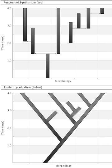Mayr later complimented Eldredge and Gould's paper, stating that evolutionary stasis had been unexpected by most evolutionary biologists, and that punctuated equilibrium had a major impact on paleontology and evolutionary biology. A year before their 1972 paper, Niles Eldredge published a paper in the journal Evolution which suggested that gradual evolution was seldom seen in the fossil record and argued that Ernst Mayr's standard mechanism of allopatric speciation might suggest a possible resolution. The Eldredge and Gould paper was presented at the annual meeting of the Geological Society of America in 1971.